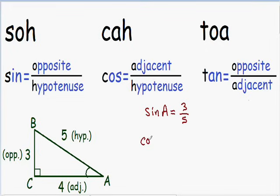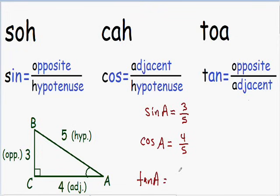Now I'll do the cosine of A. The cosine is equal to the adjacent over the hypotenuse. Since the adjacent has a length of 4 and the hypotenuse has a length of 5, the cosine of A is equal to 4 over 5. Now I'll do the tangent of A. The tangent is equal to the opposite over the adjacent. Since our opposite side has a length of 3 and our adjacent side has a length of 4, the tangent of A is equal to 3 over 4.